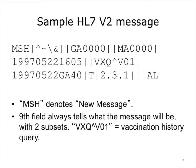In an HL7 version 2 message, every new message starts with the three-letter acronym MSH. So we know this is the first line of a message. There are 14 pipes, which indicates 15 fields overall. Another characteristic of these messages is that the ninth field in the first line denotes what type of message it is. It always has two subsets, the first of which is a three-letter acronym — in this case, VXQ. VXQ carat VO1 indicates that this is a vaccination history query.